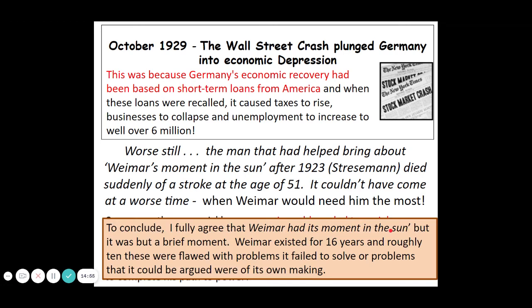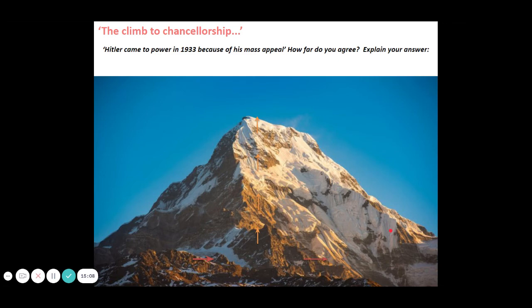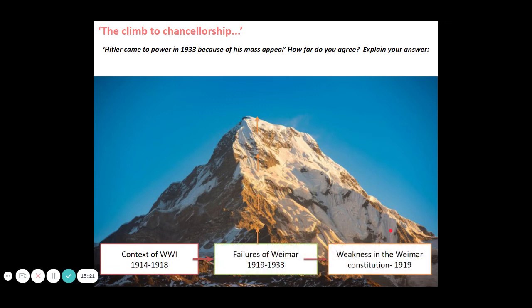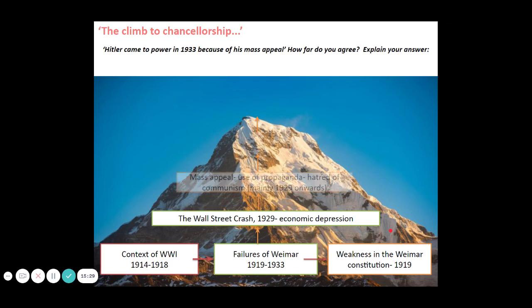To conclude, the Weimar Republic had its moment in the sun, but this was a brief moment. It existed for 16 years and roughly 10 of those were flawed — problems it failed to solve, or problems that could be argued were of its own making. So we get to the final part: Hitler's climb to the chancellorship. How does Hitler climb this mountain to become chancellor — like prime minister of Germany? We start with the context of the First World War, add the failure of the Weimar Republic and the weaknesses of the Weimar Constitution, then the Wall Street Crash creating economic depression, and from that the mass appeal of the Nazis. Hitler promised very simple solutions to very difficult questions, and the fear of communism meant that many reasonable middle-class people were drawn towards Hitler's extreme right-wing views, fearing losing everything in the Great Depression or to a communist revolution after 1929.